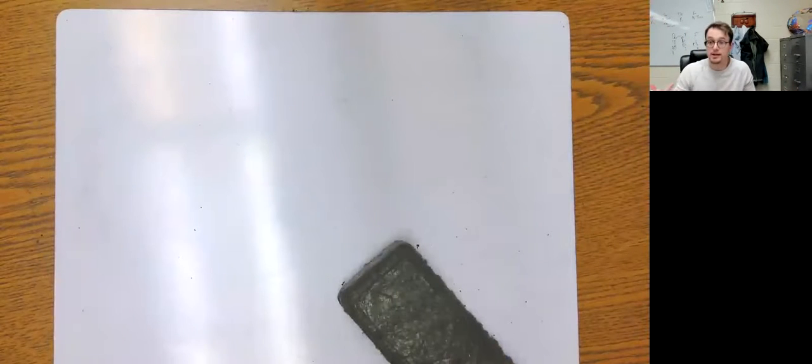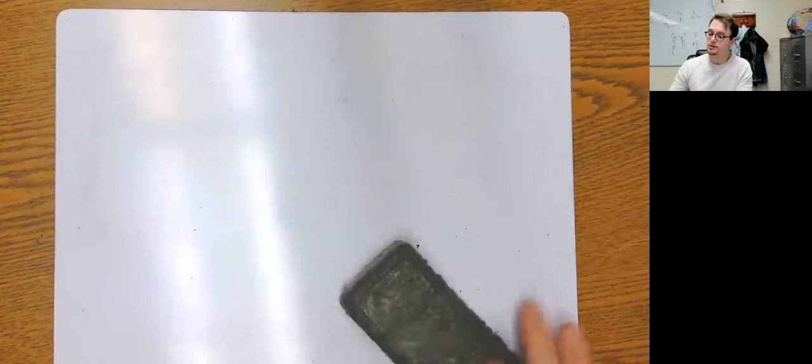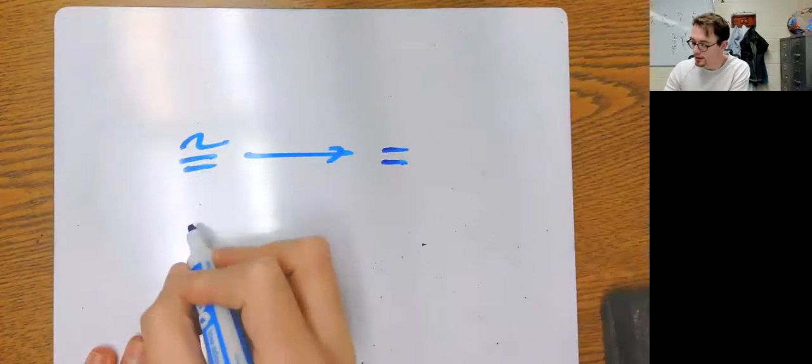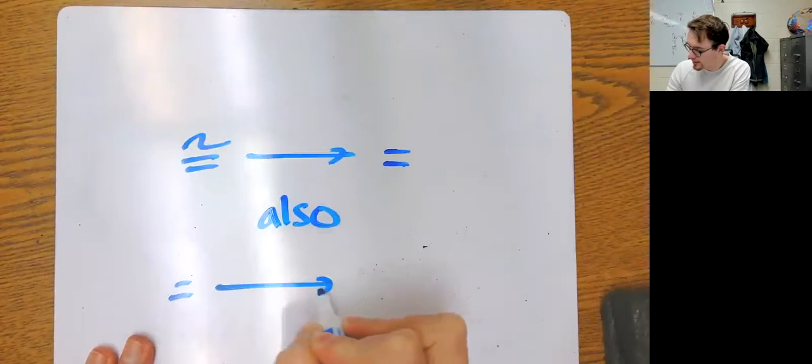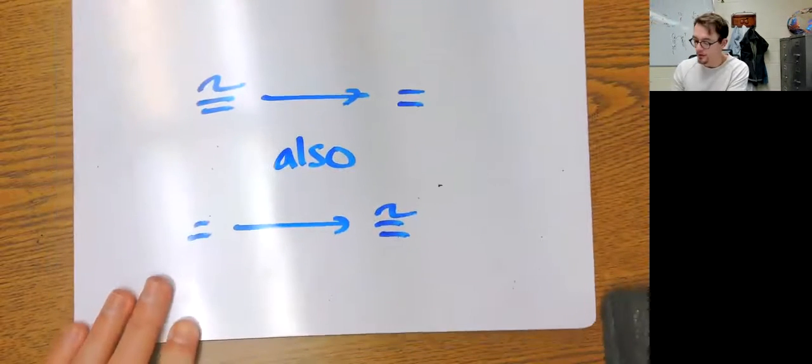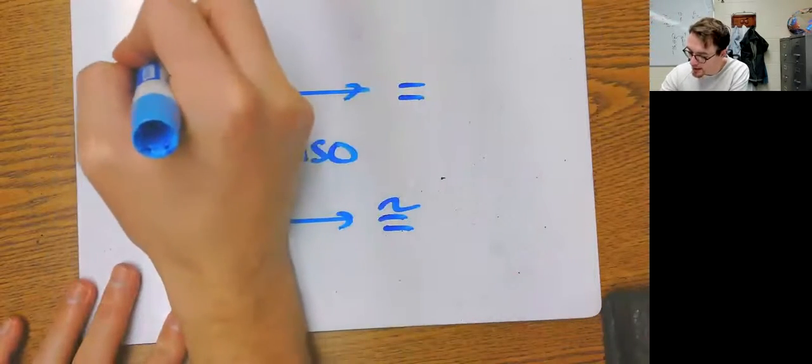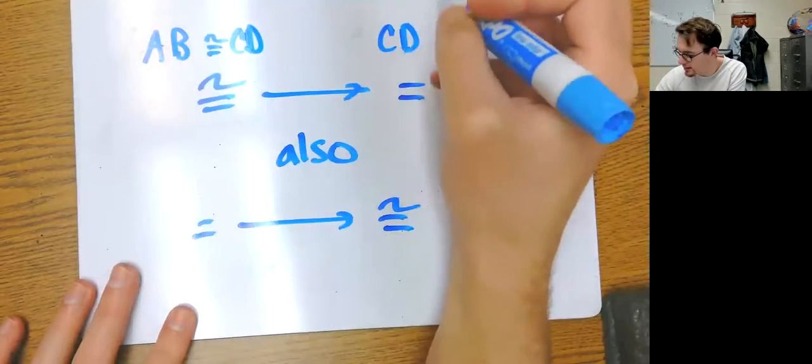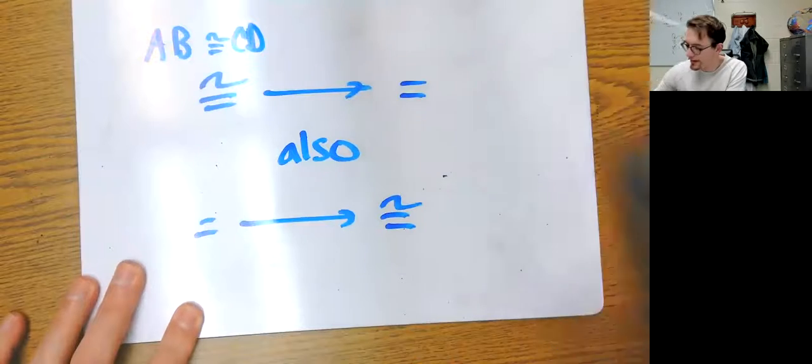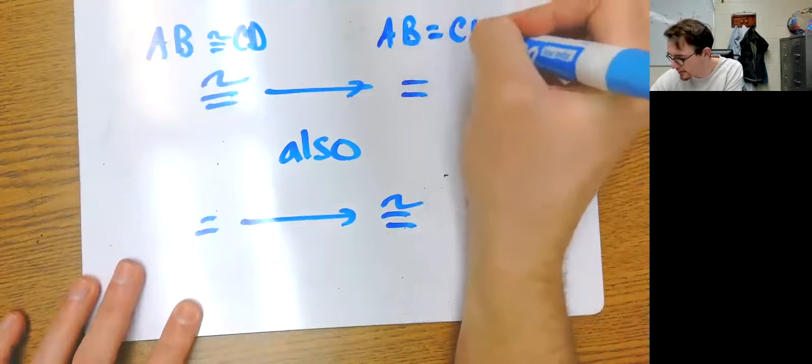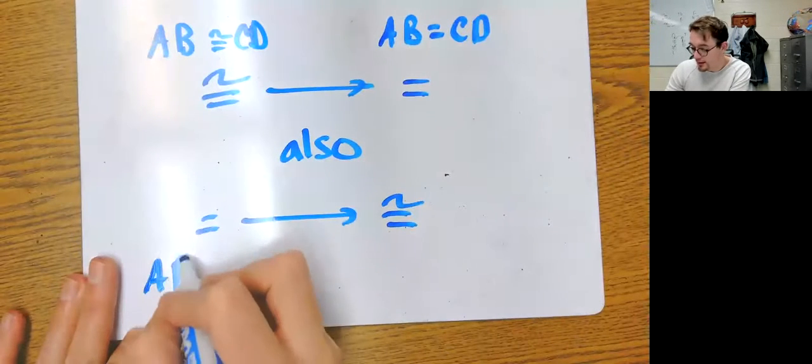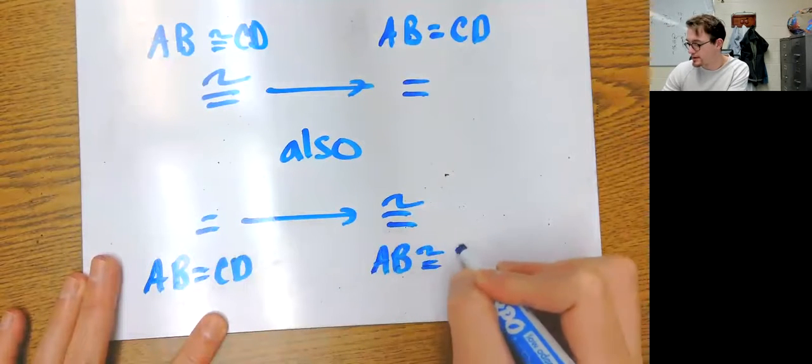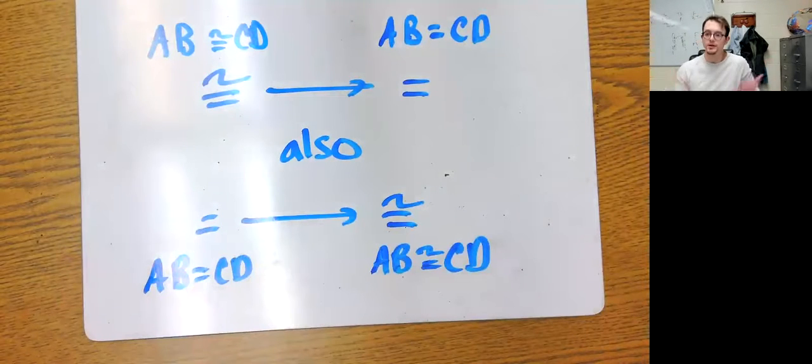That's really it. You just need to understand that you can go from congruence to equal and you can also go from equal to congruent. If you have AB is congruent to CD, then AB equals CD. Also, if AB equals CD, then you can change that to AB is congruent to CD.